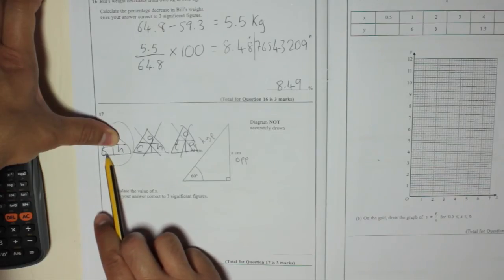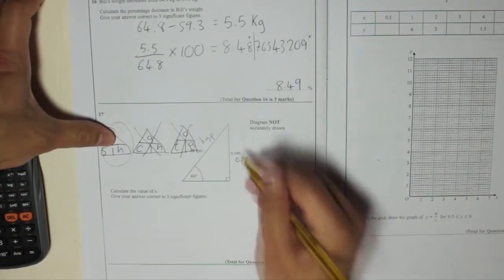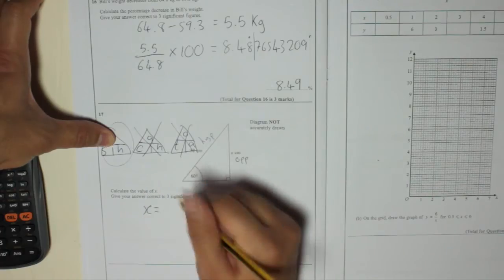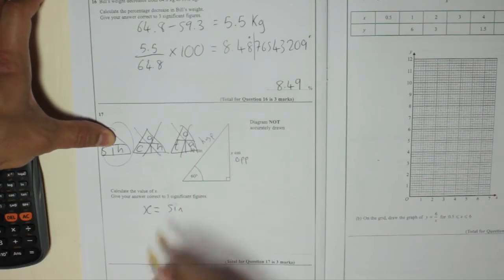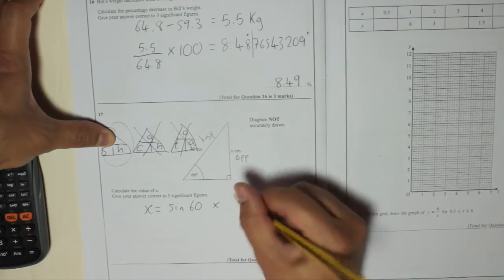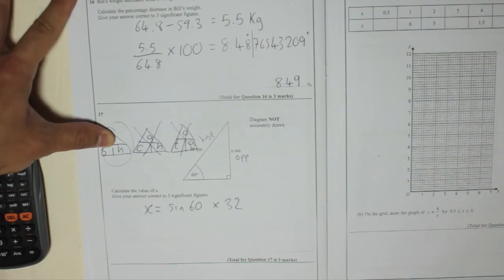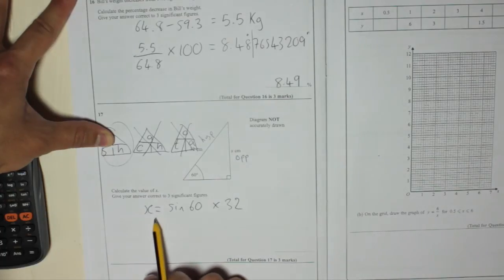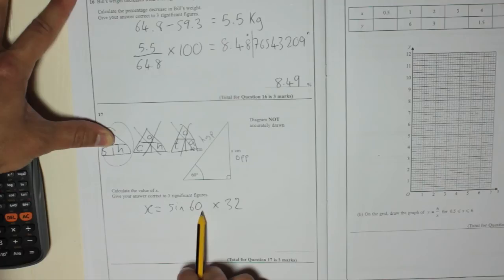You're going to multiply sin of the angle. So opposite, which is X, is equal to sin of the angle, which is 60, times by the hypotenuse, 32. Now quite often people write it as 32 sin 60. Okay?